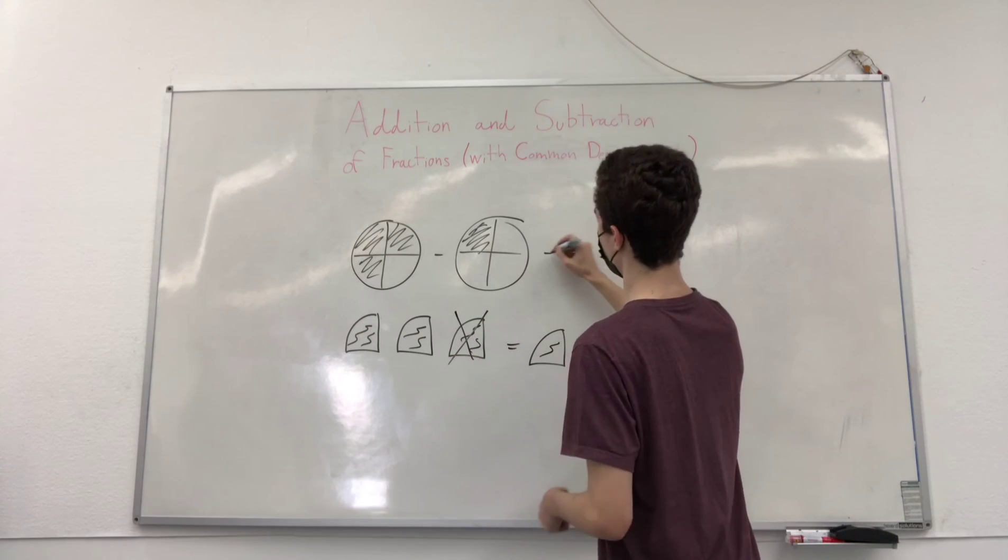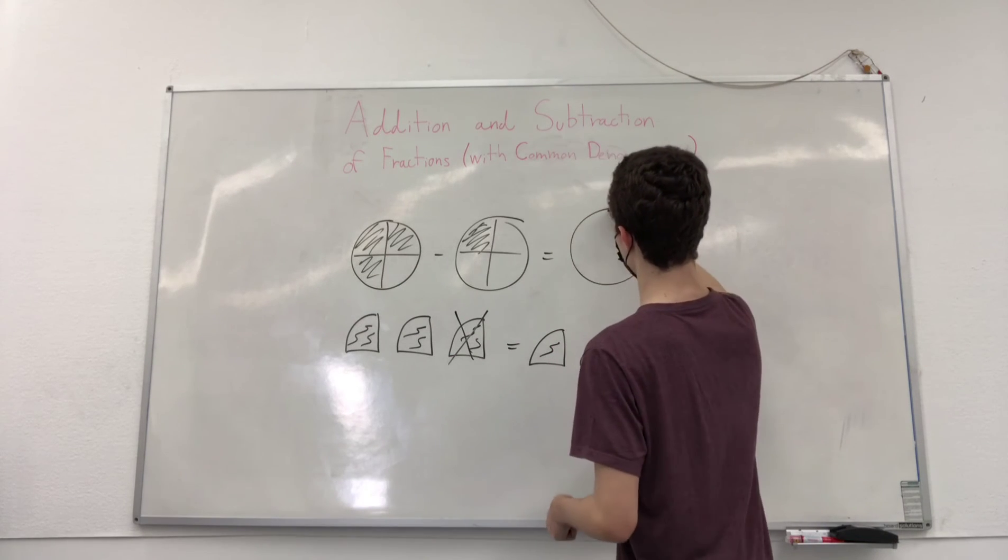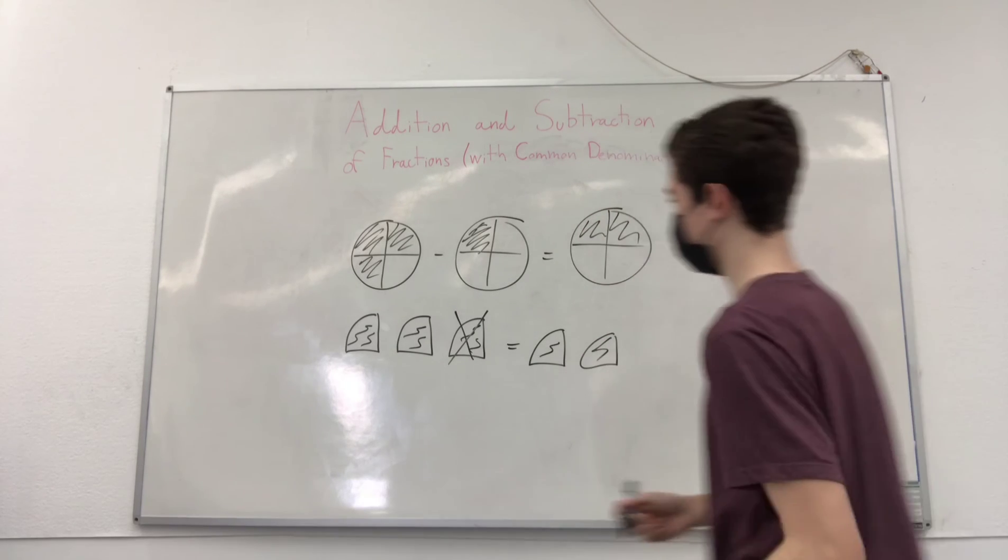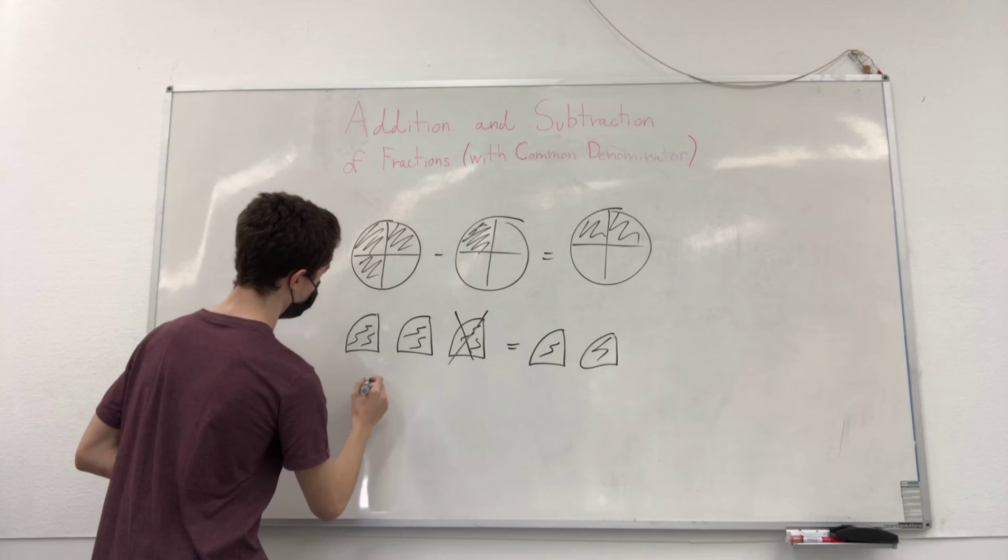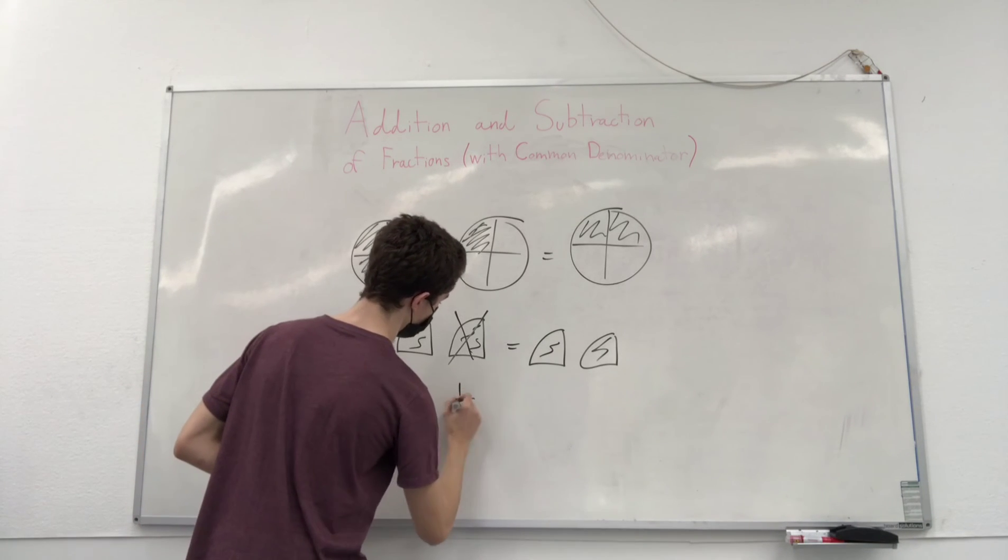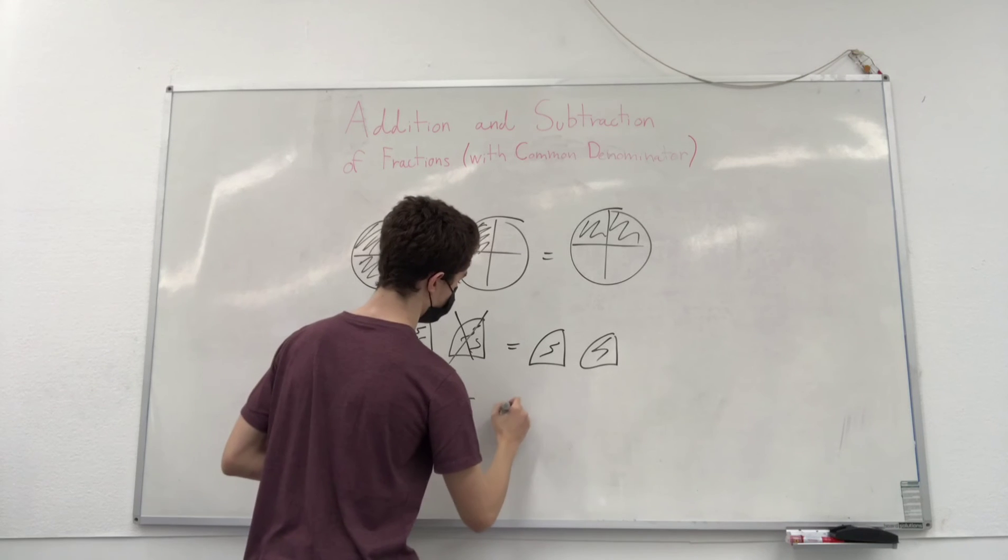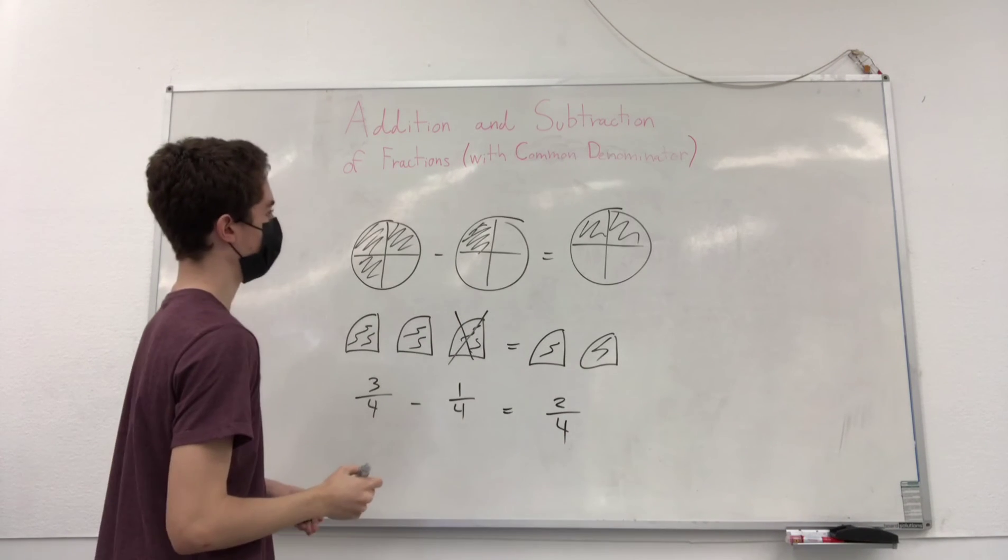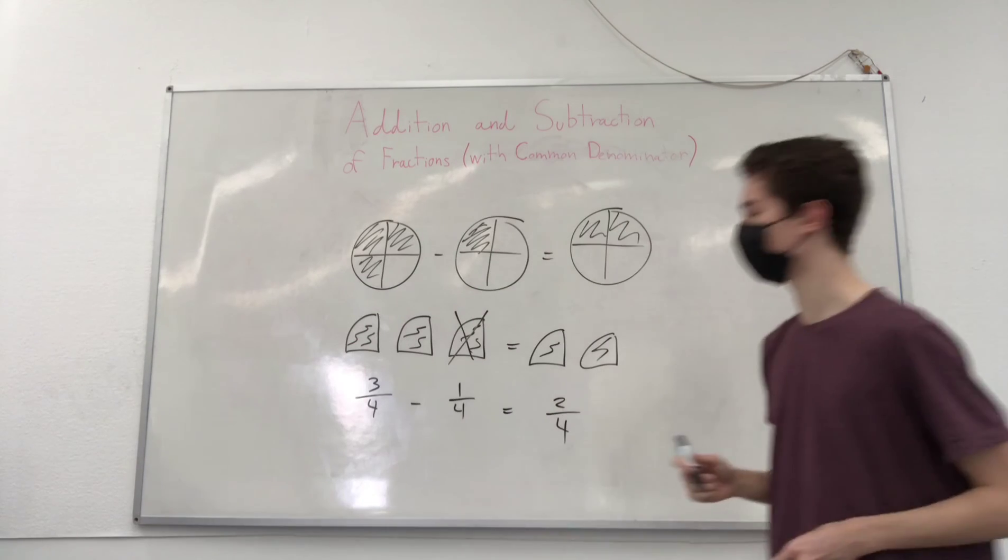How would you write that? Here, you are left with two fourths. And in numbers, that would be written as, here we have three fourths minus one fourth equals two fourths. And this would be your final answer.